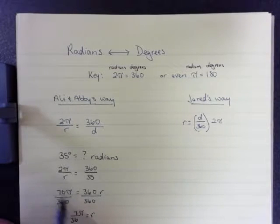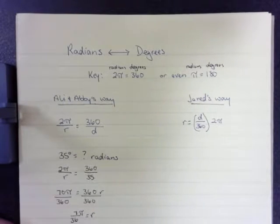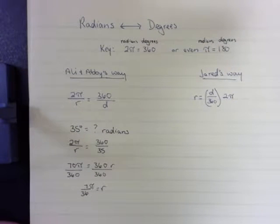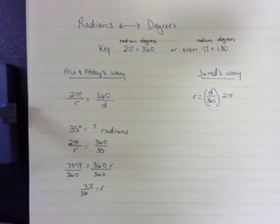Now, that's because I can simplify 70 over 360. So that's how many radians there are in 35 degrees, 7 over 36 pi.